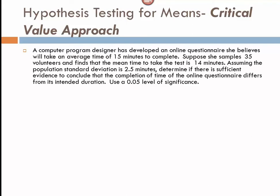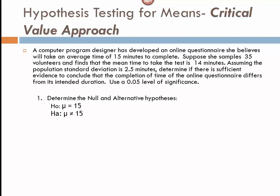For our hypotheses, the null is what is currently believed — she designed the test to take 15 minutes, so the null is that the mean test time equals 15 minutes. We're trying to determine whether it differs from 15, so the alternative is mu not equal to 15. Notice that although the sample showed 14 minutes, we determine the sign from the wording of the question, not the results of the sample.